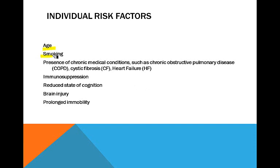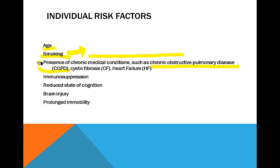Smoking is obviously a risk factor — all the carcinogens in tobacco and the particles cause your lungs to build up with tar and negatively affect your airway. Chronic obstructive pulmonary disease, usually caused by smoking, affects the flow of oxygen through the body. Cystic fibrosis is kind of like COPD for kids. Heart failure affects the cardiac output. Immunosuppression makes you more prone to disease. A reduced state of cognition or brain injury will cause issues with your respiratory drive.